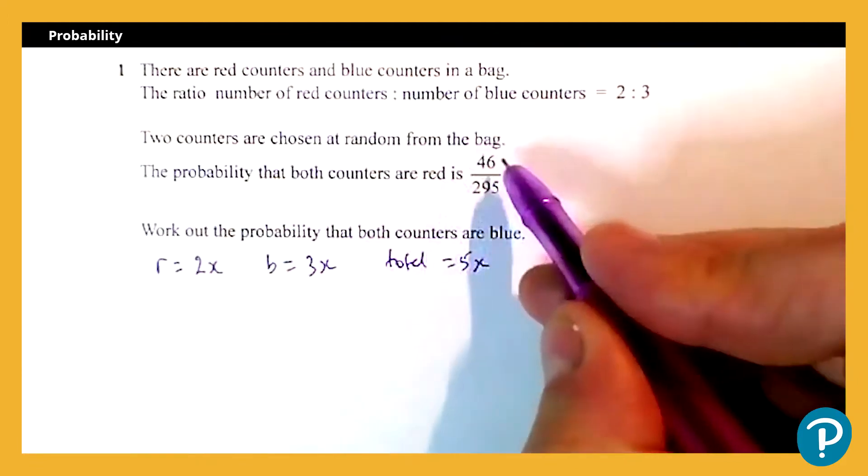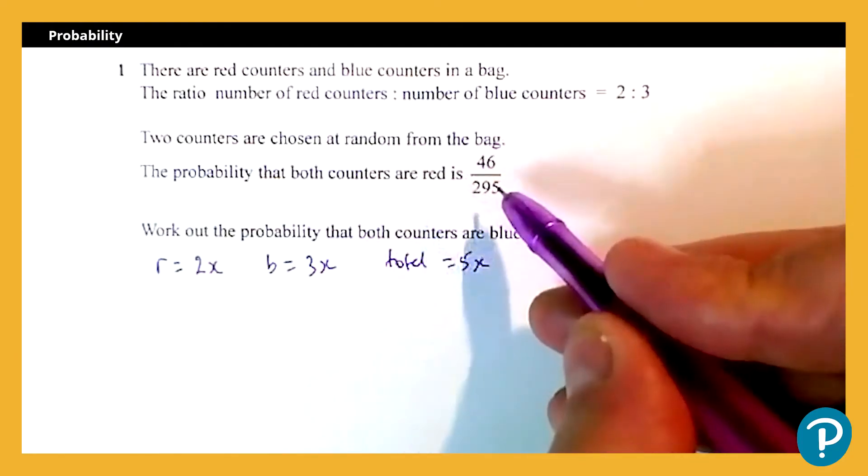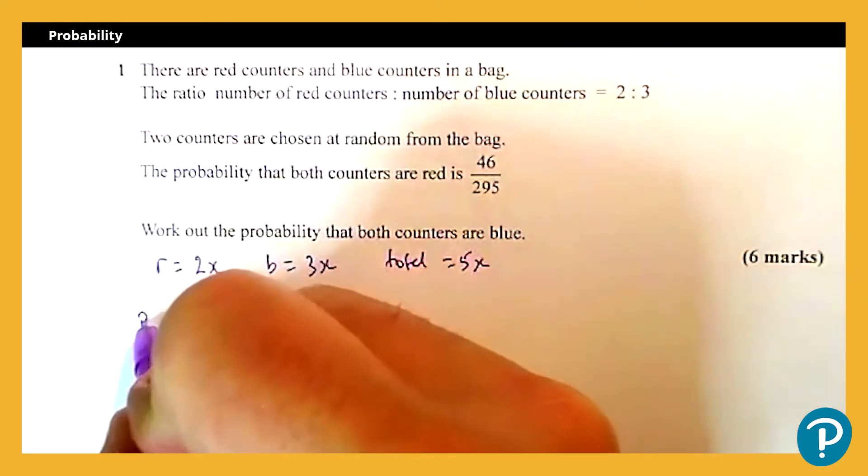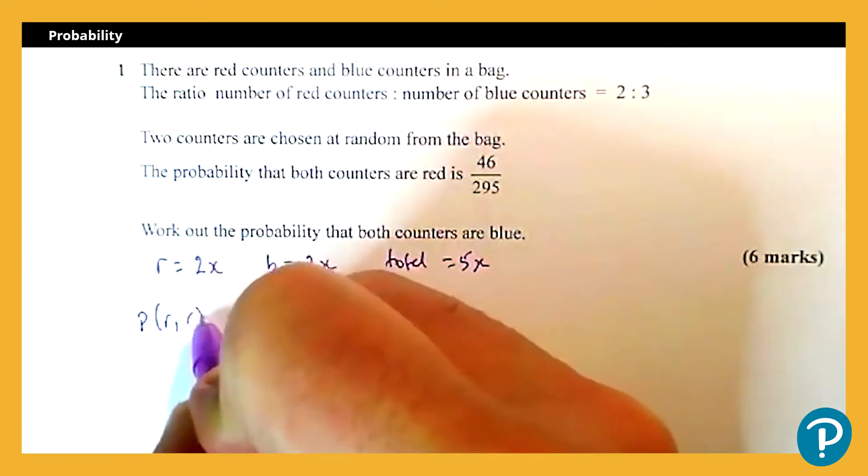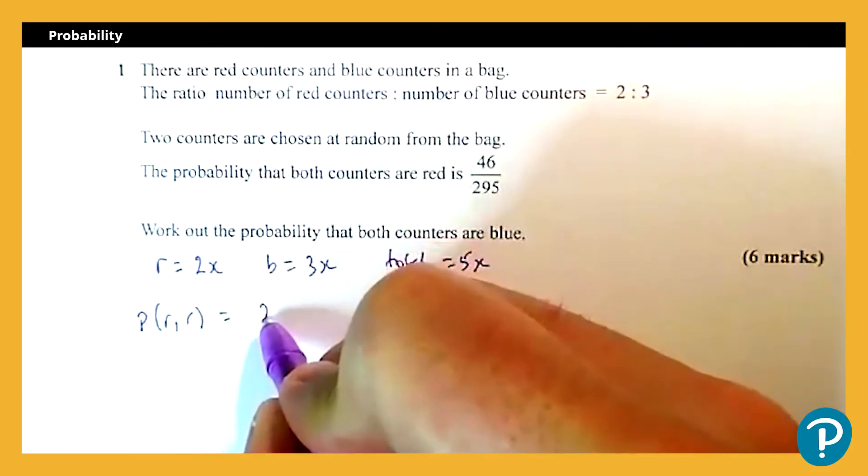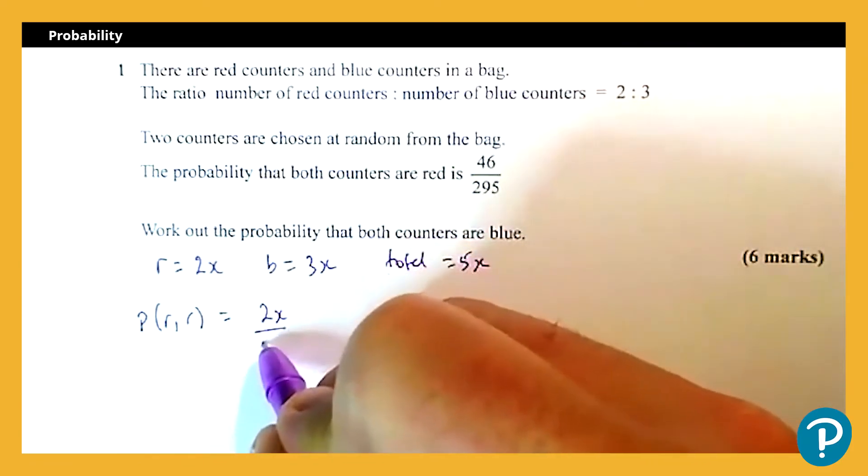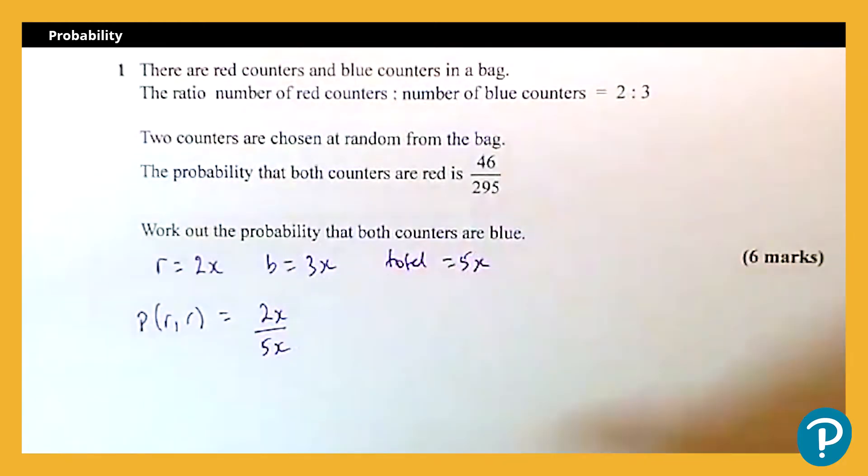So it gives us the probability of both red, so that's how I'm going to form my equation. The probability of red and red is going to be 2x out of 5x for the first one.